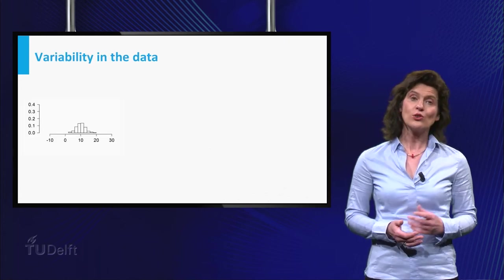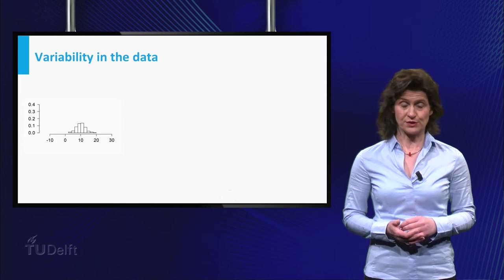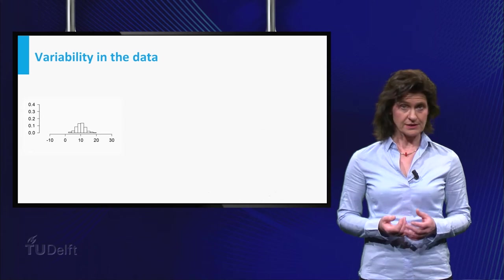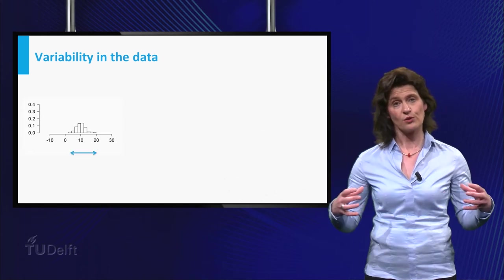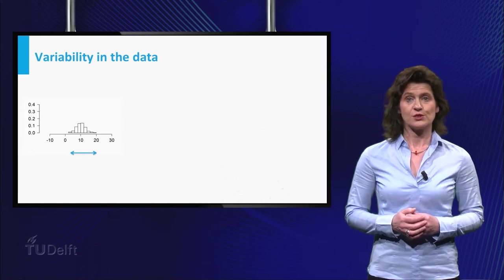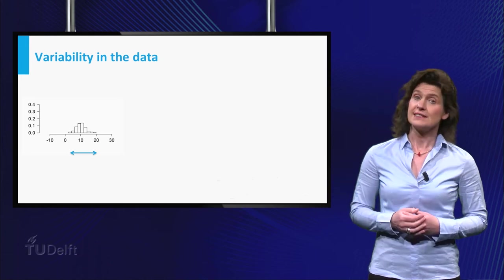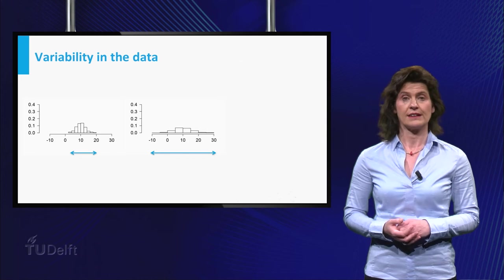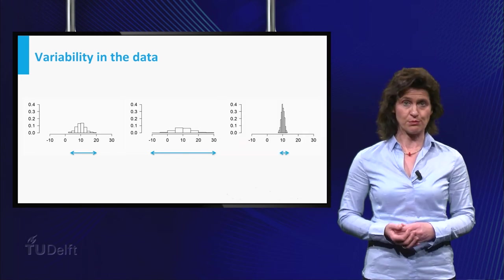Statisticians are also interested in the variability of the data around the center. In terms of the histogram of the data given here, the spread is related to the width of the bell shape. The spread in this dataset is less than the spread in the dataset visualized here. And this third dataset has even smaller variability.